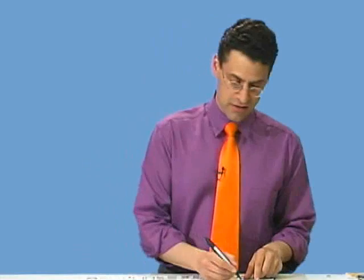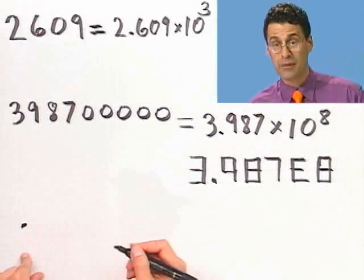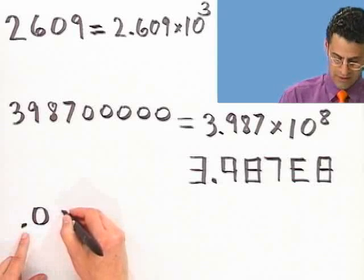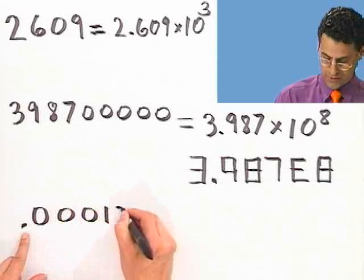This also works in reverse. For example, suppose you have a really tiny number. Ooh, it's so small. For example, consider my IQ. That would be 0.000132.